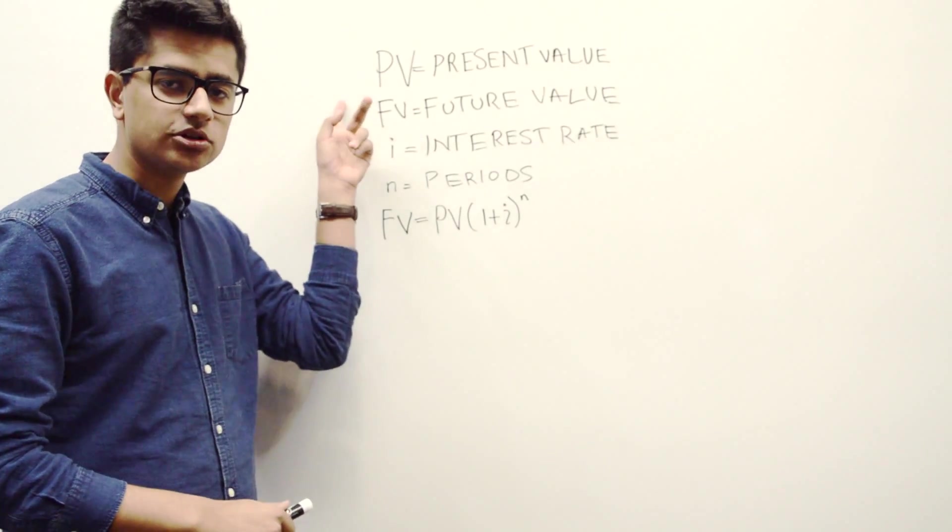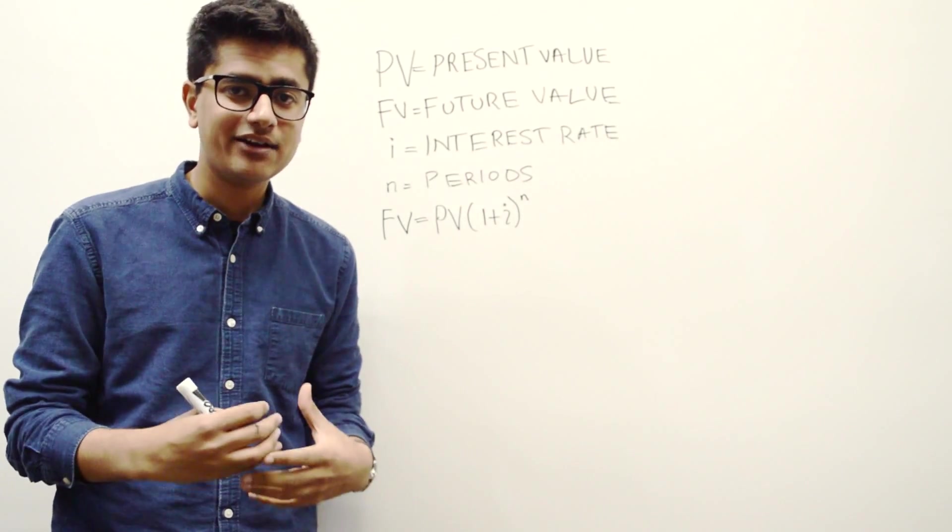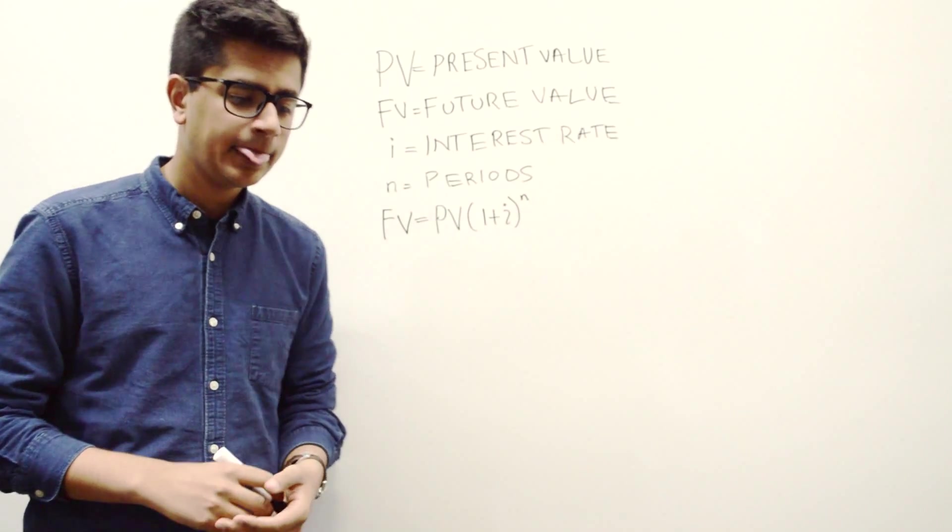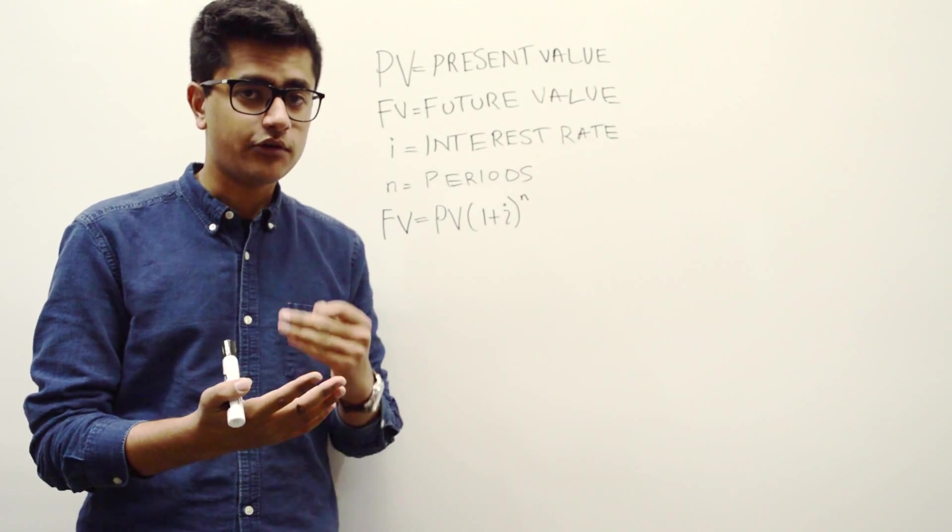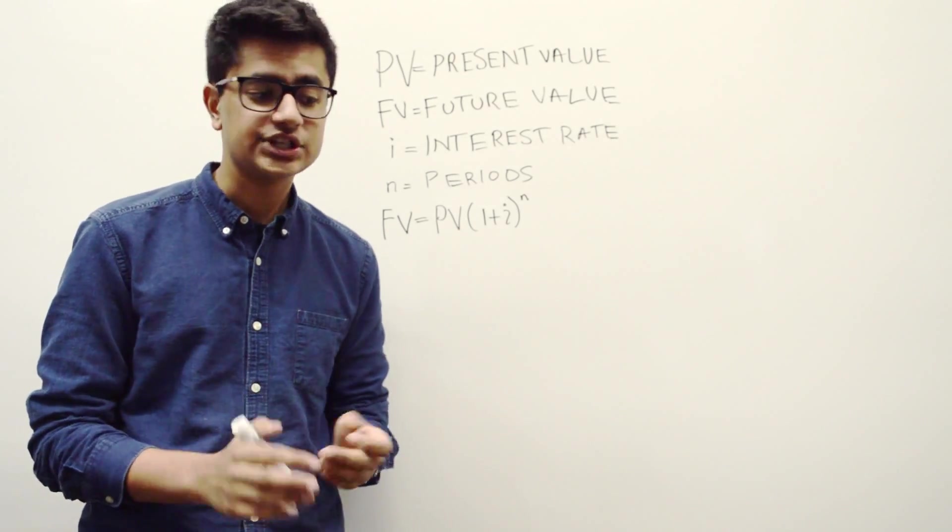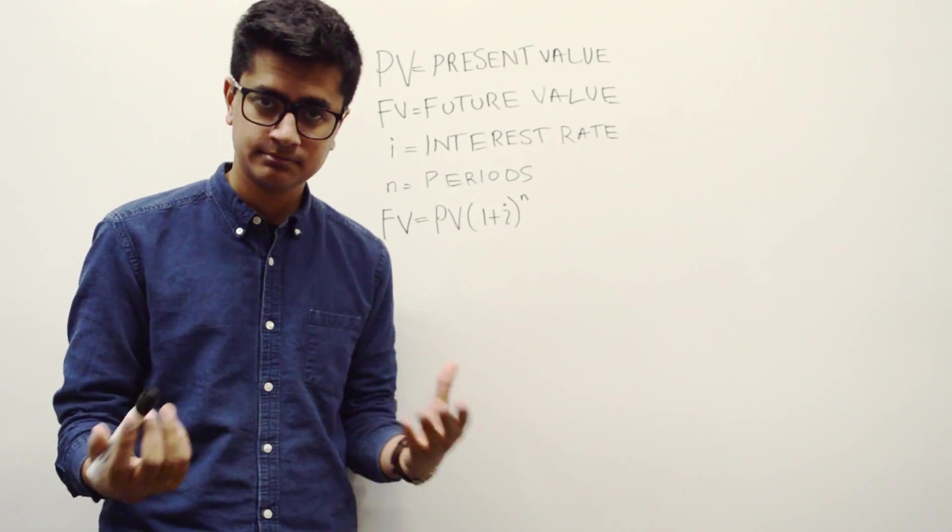So present value, essentially that's how much money you have today, in the present. So basically if I pull out a $100 note, the present value of how much I have is $100. I have it, I can see it in front of myself. Easy.